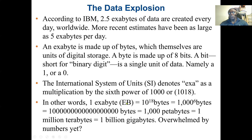By the International System of Units, the prefix exa denotes multiplication by the sixth power of 1,000, or precisely 10 to the power 18. In other words, one exabyte equals 10^18, or 1,000^6, meaning 18 zeros. That's a lot more than a trillion: a trillion is 12 zeros, so an exabyte is 1,000 petabytes.